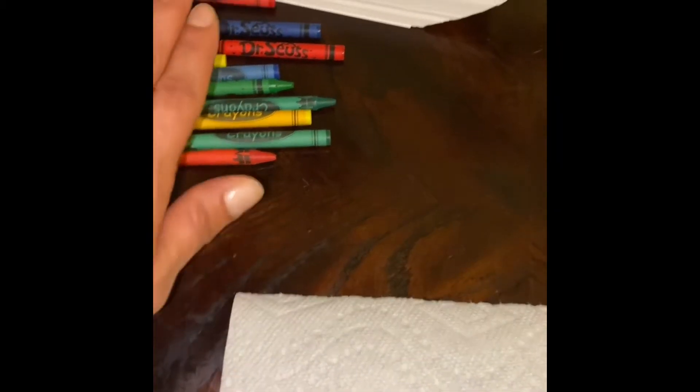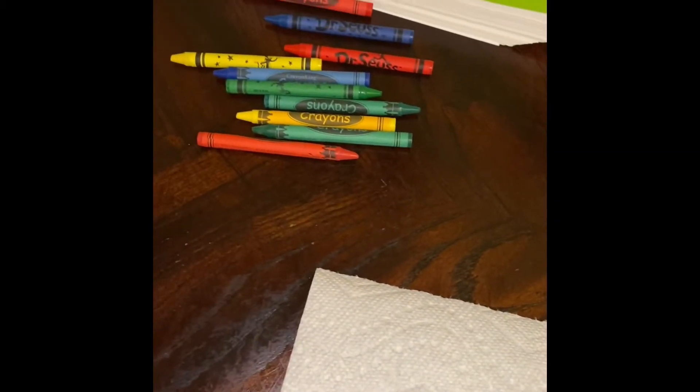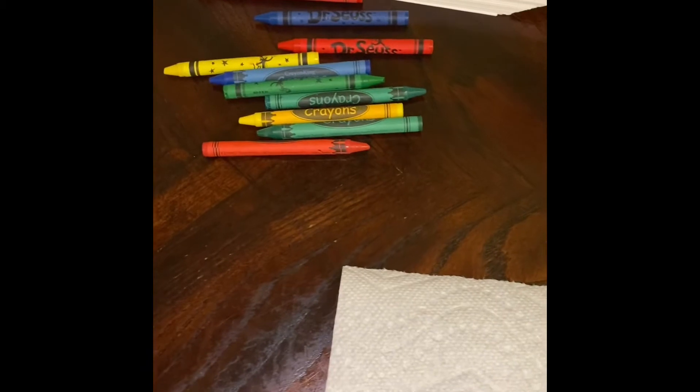So the first thing you're going to need are 10 counters. I'm using 10 crayons, and I'm going to use a paper towel to prevent it from rolling off. So what I'm going to be asking you is to show me. So you have to listen to what I'm asking you to show me. So the first thing we're going to do is show me what's one more than zero.